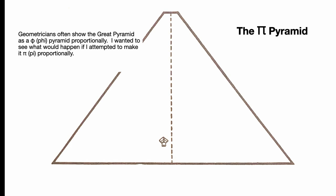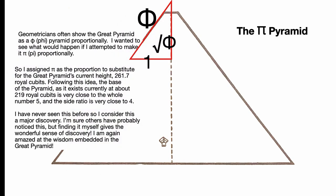As I said, geometricians often show the Great Pyramid as a Phi pyramid proportionally. I wanted to see if I could get a Pi proportion going here. Now there's the neat Phi proportion we talked about. Phi for the apothem, square root of Phi for the height, and then one for the half base. So I assign Pi as the proportion to substitute for the Great Pyramid's current height, which is 261.7 royal cubits. It's not the 280 because we're talking about what's actually existing there. There's no pyramid on the top, no Pyramidian.